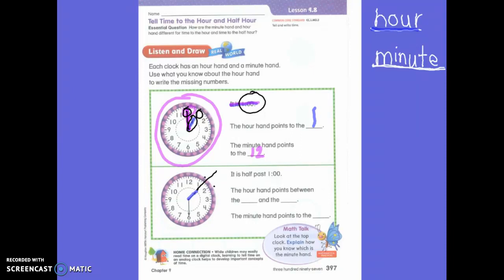So we call that half past. Very good. It is half past. Half past one o'clock. So the hour hand is between the one and the two. So when that happens, what did you notice about my minute hand? It changed.